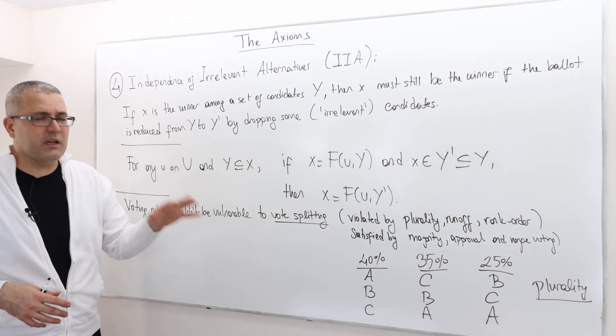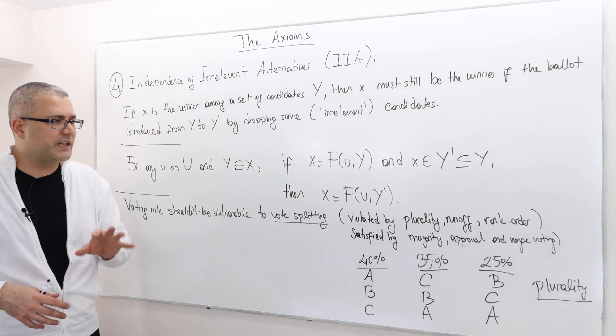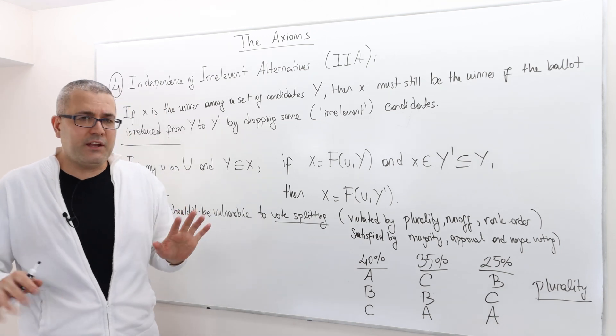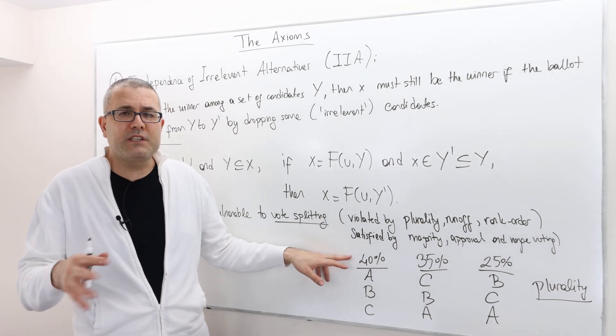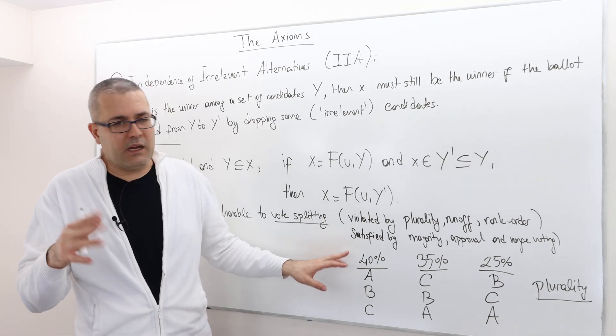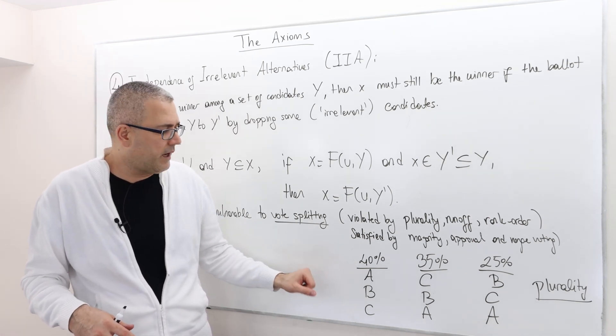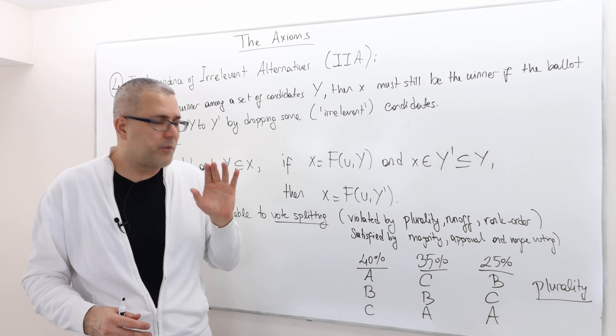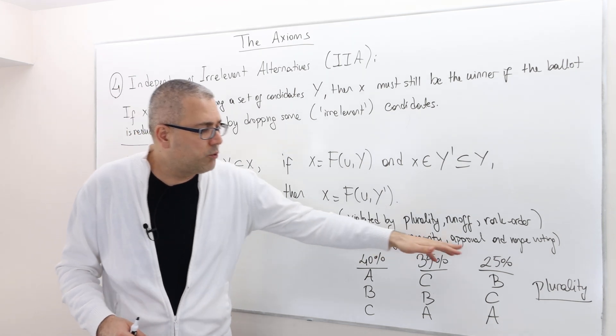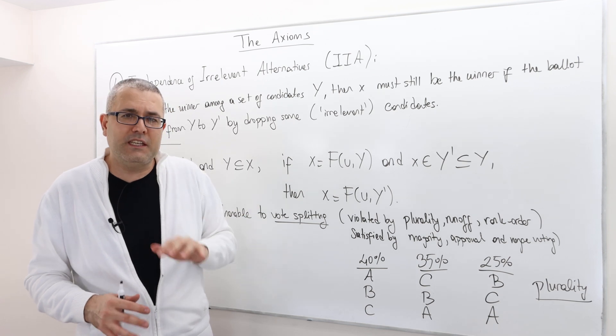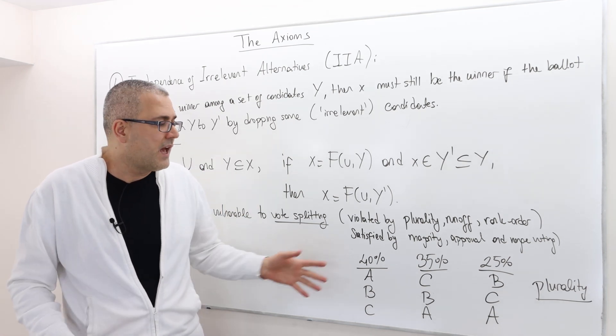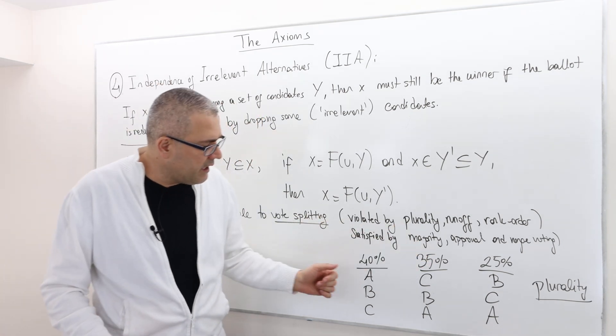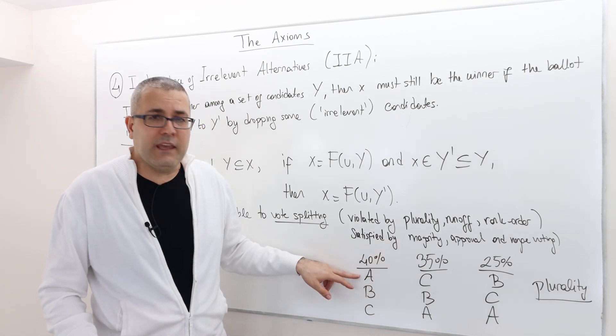This example is actually from real election data. I'm not going to say who were the candidates, but imagine a profile where 40% of the population ranked A over B and B over C. And then 35% of the population ranked C top, B second, A third. And then only 25% of the population ranked B first, C second, and A third. And our voting rule is plurality. According to plurality, the winner is going to be A.